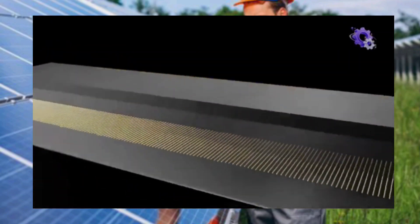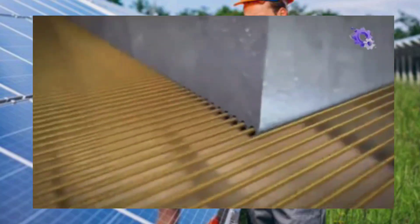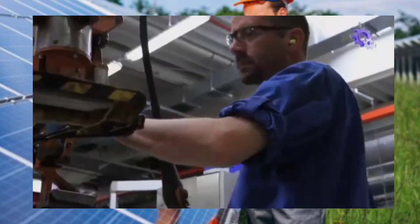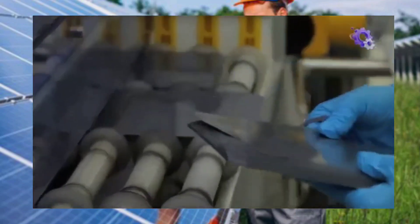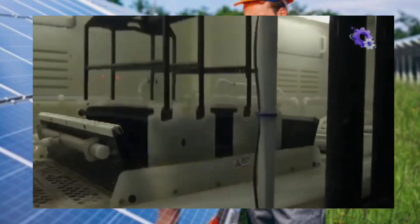The silicon ingots are sliced into thin wafers using a wire saw, a process that requires precision to minimize material loss. These wafers, typically less than 200 micrometers thick, undergo surface treatment to remove any remaining impurities and defects.